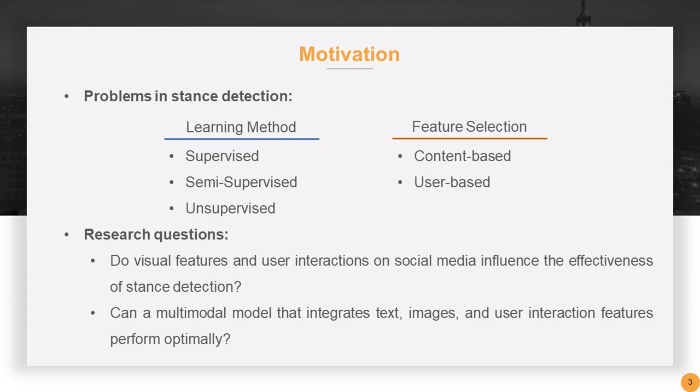Although unsupervised learning solves this problem, current related research has not deeply explored specific features. Most research relies on features related to the post content, followed by user-related features such as personal information, following, and followers.